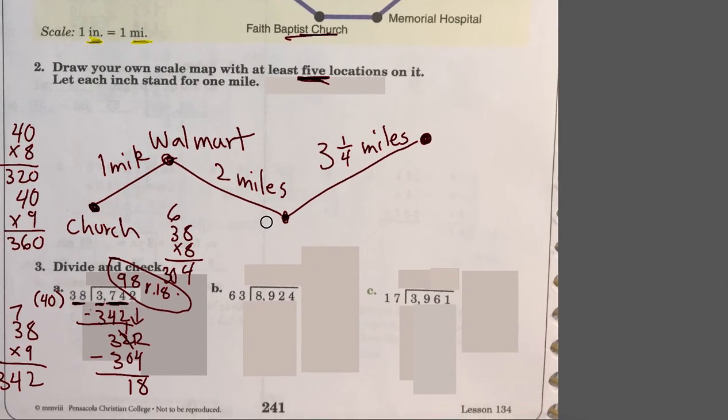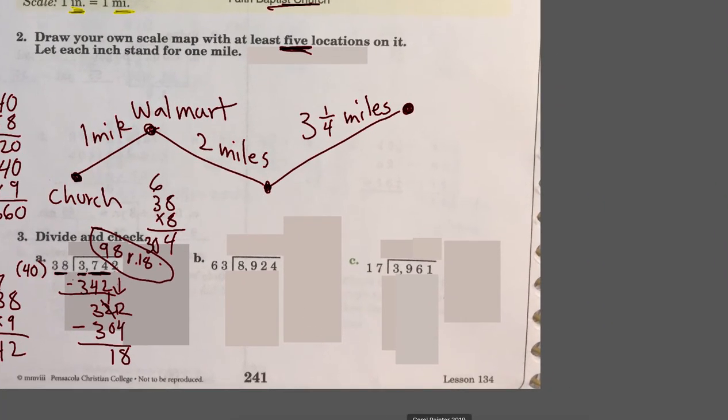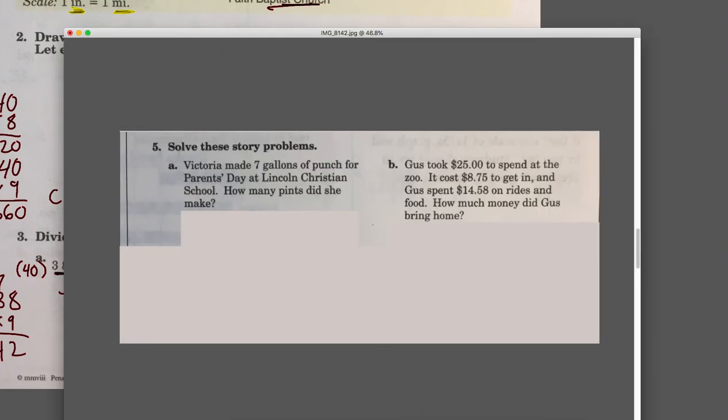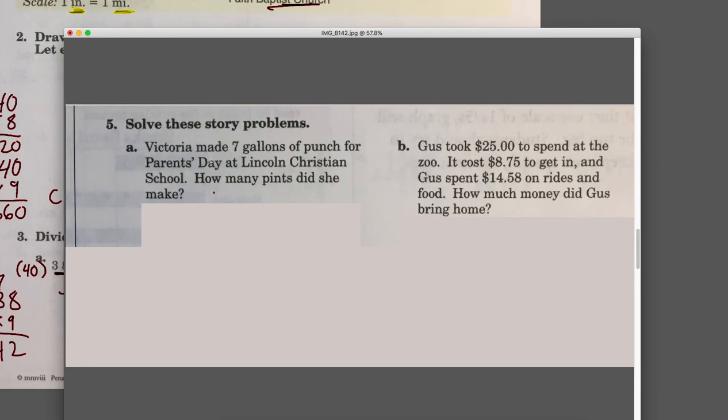Let's go to the next page. For this page, I'm just going to do the word problem here. I know a lot of you guys have a hard time with word problems. Here's the first one: Victoria made seven gallons of punch - circle seven gallons. Remember to always circle the numbers that you see. Punch for parents day at Lincoln Christian School. How many pints does she make? Underline the question.